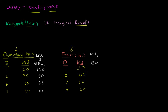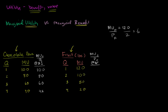Now what is the marginal utility per dollar for fruit? For that first pound of fruit, I'm getting 120 marginal utility points but I paid two dollars, so that's 120 divided by 2 — I'm getting 60 marginal utility points per dollar. The second pound gives 100 utility points at two dollars, so that's 50 points per dollar. The third pound gives 25 points per dollar, and the fourth gives 10 points per dollar.